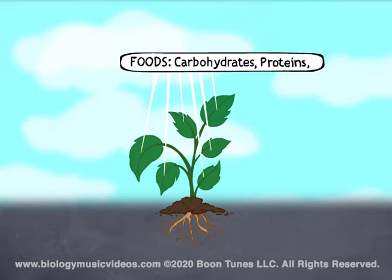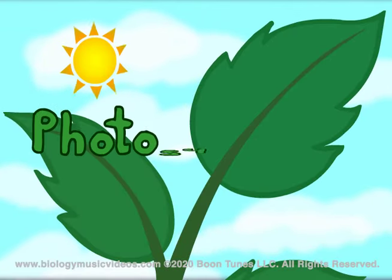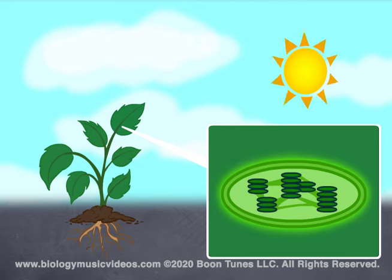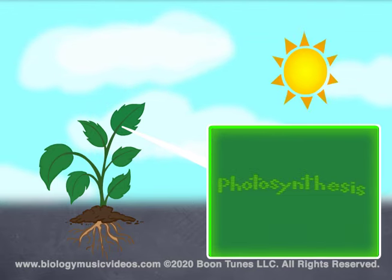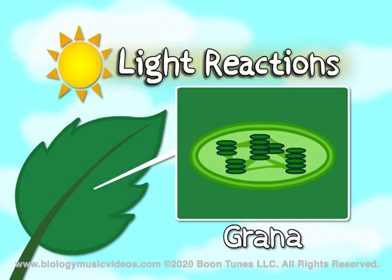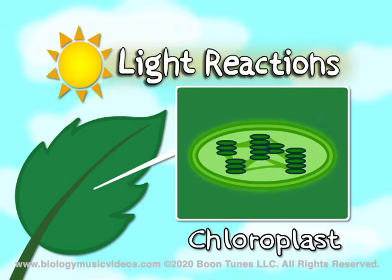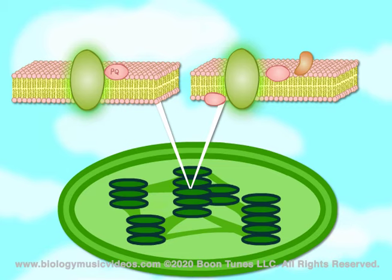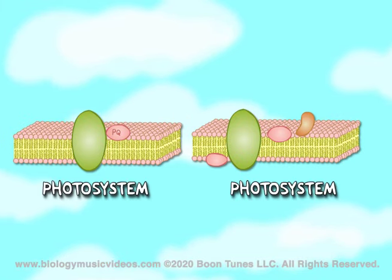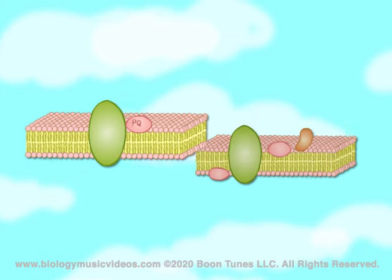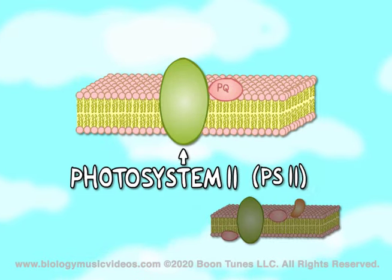Plants make food and it starts with this — talking about photosynthesis. The light reactions take place fast in the grana of the chloroplast. They're stacks of thylakoids which contain two photosystems in their membranes. Both photosystems, two and one, harvest light energy from the sun. But the first steps I'll explain to you occur in photosystem 2, or PS2.